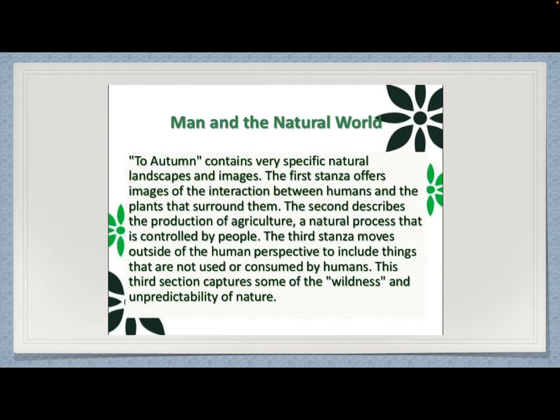One theme is man's connection to the natural world. To Autumn is a poem that connects to the natural landscape and its images. In the first stanza we see that human beings and plants have a connection. The second stanza describes how agriculture is important and how it is controlled by people, while the third stanza shows the things that are not in human control — nature is not only your friend but also wild, with its own territory and its own will.